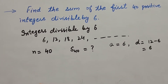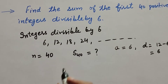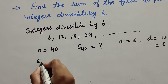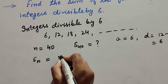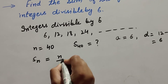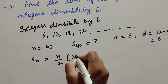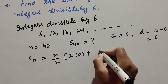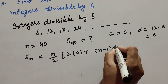Now we find the sum of 40 terms of the given AP series. We know the formula to find the sum of n number of terms: S_n equals n over 2 into 2a plus n minus 1 into d.